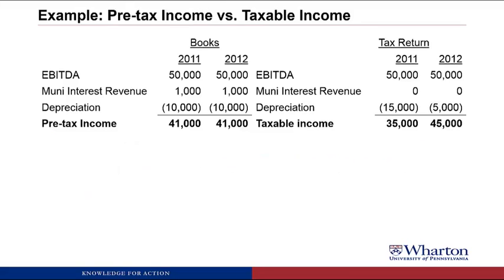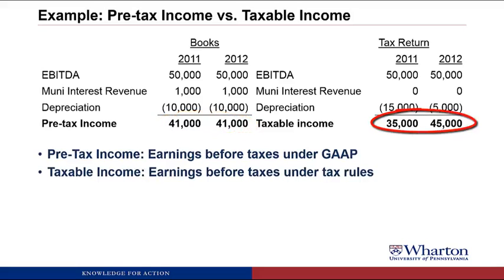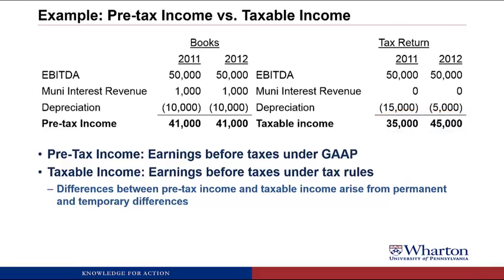Now let's look at the differences between pre-tax income and taxable income. We have EBITDA, muni interest revenue, and depreciation. On the financial statements, pre-tax income — earnings before taxes under GAAP — is $41,000 each year: 50,000 plus 1,000 minus 10,000. On the tax return, taxable income is different: $35,000 in 2011 and $45,000 in 2012, because the municipal bond interest revenue doesn't appear and the depreciation is different. So the differences between pre-tax income and taxable income arise from both permanent differences (like muni interest revenue) and temporary differences (like depreciation).